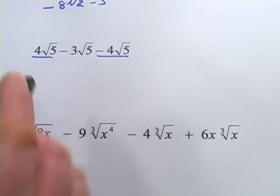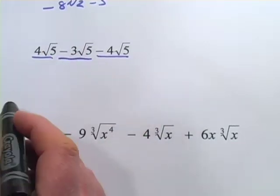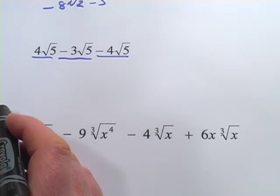And what you'd be left with is just a negative 3 times the square root of 5. And you'd be right. That would be the answer.